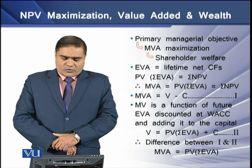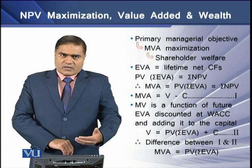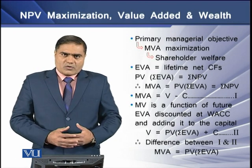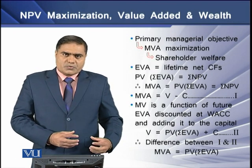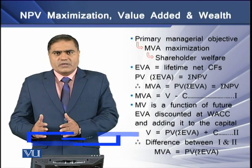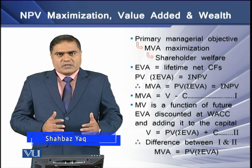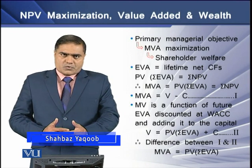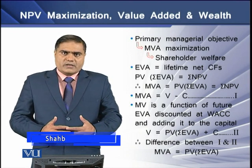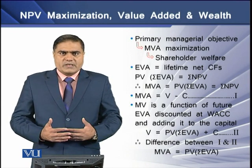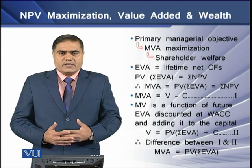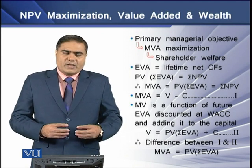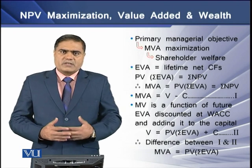With these two phenomena we can derive another equation: that the market value added of a firm is equal to the present value of its future EVAs, which is basically equal to the NPV of the firm. So there is a relation between these three phenomena — they can be determined at different points of time and they would entail the same value.